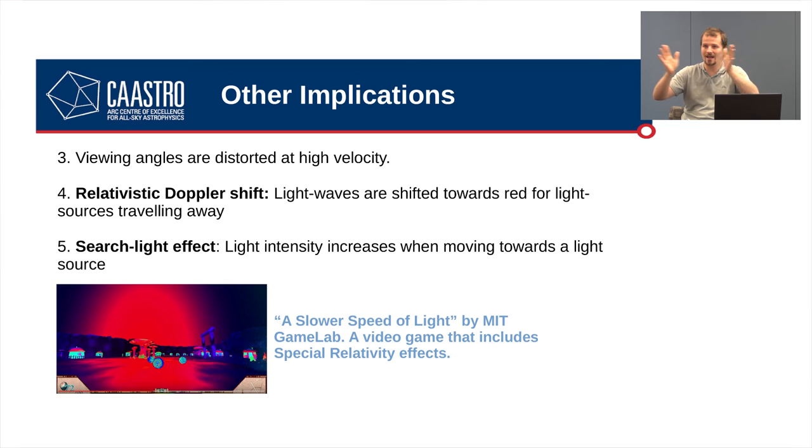A couple of other ones is that viewing angles are distorted at high velocity and also there's a relativistic Doppler shift. You would have probably heard of the Doppler shift of sound. Well, there's also a relativistic Doppler shift of light waves. And also the searchlight effect is where if you're travelling towards a light source the intensity of that light source increases. And just to plug this, there's a really cool little game actually developed by MIT. It's called the slower speed of light. And inbuilt to the physics of that game is special relativity. So, as you move around, you can move around close to the speed of light and everything looks like it should do if special relativity were true. You can get a kind of cool intuitive understanding of what's happening. You can get that for free online.